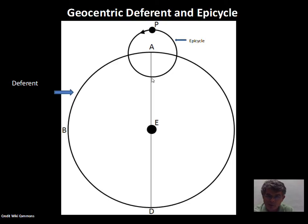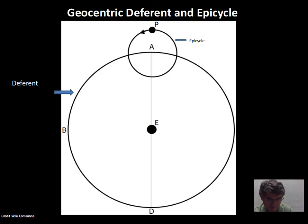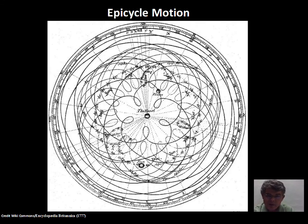The planets do get brighter when they're on the opposite side of the Earth from the Sun, and this brightness change is accounted for by the size of the epicycle — that can be adjusted to match the observed change in brightness. Ptolemy's model will predict retrograde motion. It's not perfect, but it is a working model that was in vogue for many years. With this epicycle and deferent arrangement, the planets trace loop patterns, and on the edge of the loop, we have the retrograde motion taking place.